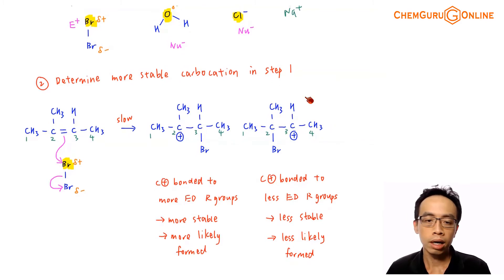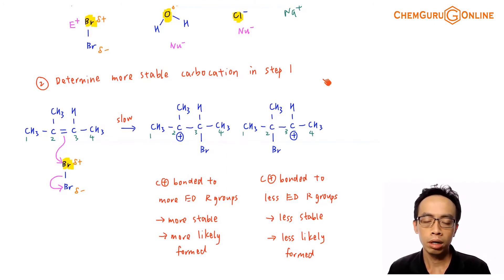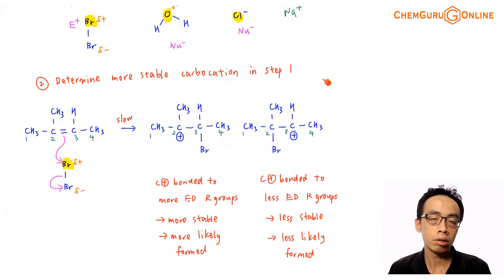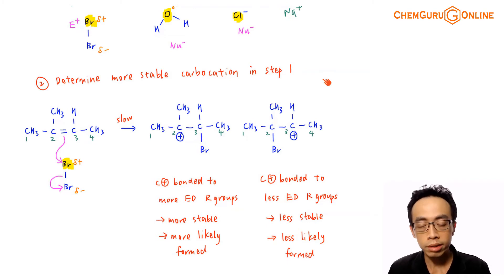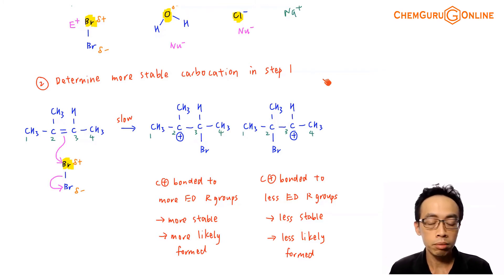We have at least two possible carbocations, and we have to consider which is more stable. The more stable the carbocation, the more likely it will be formed. The system will favor the formation of the more stable carbocation, and eventually this will give the major product — because the system favors that species, it will tend to form more of it.